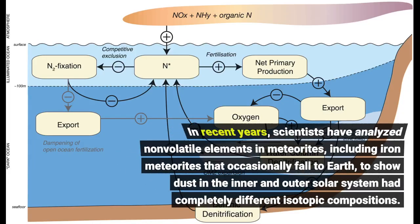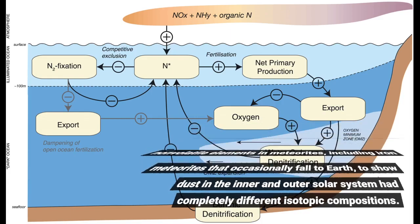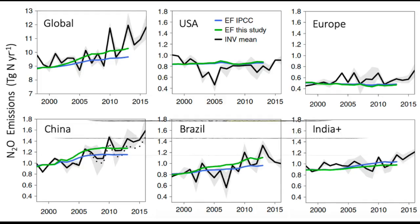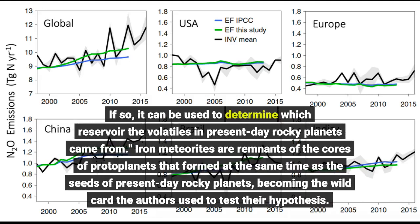In recent years, scientists have analyzed non-volatile elements in meteorites, including iron meteorites that occasionally fall to Earth, to show that dust in the inner and outer solar system had completely different isotopic compositions. This idea of separate reservoirs had only been developed for non-volatile elements, Grawal said. We wanted to see if this is true for volatile elements as well, and if so, it can be used to determine which reservoir the volatiles in present-day rocky planets came from.